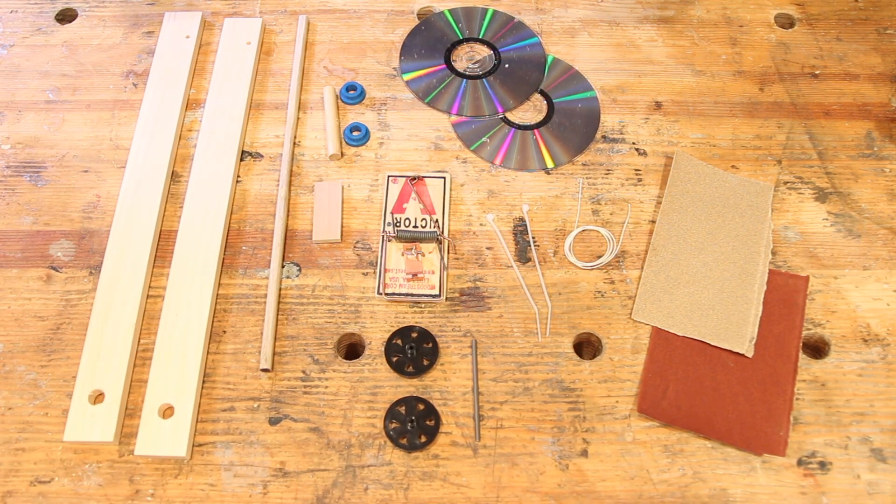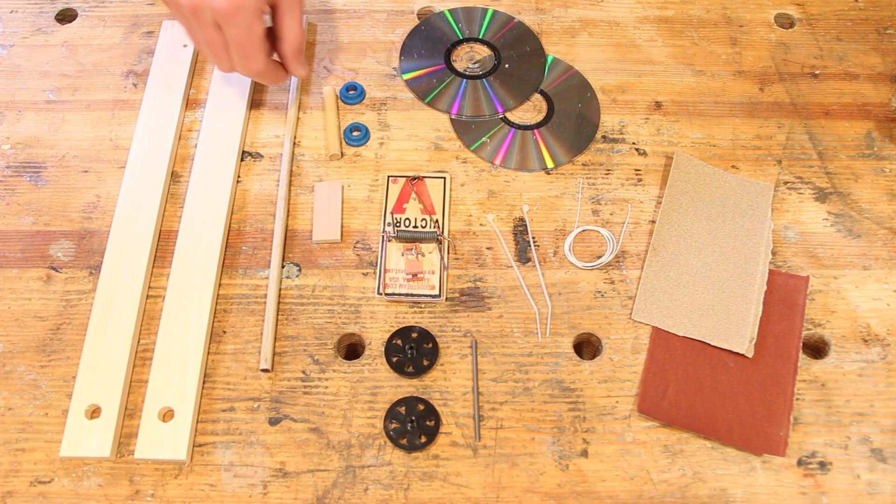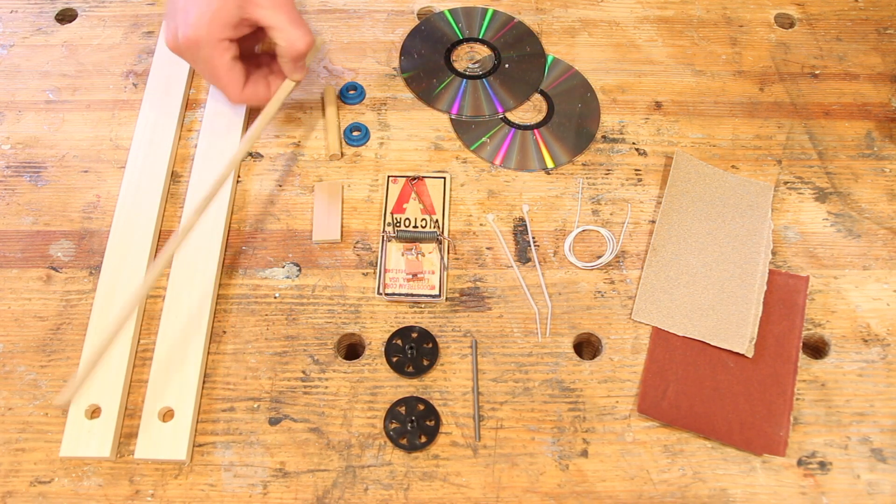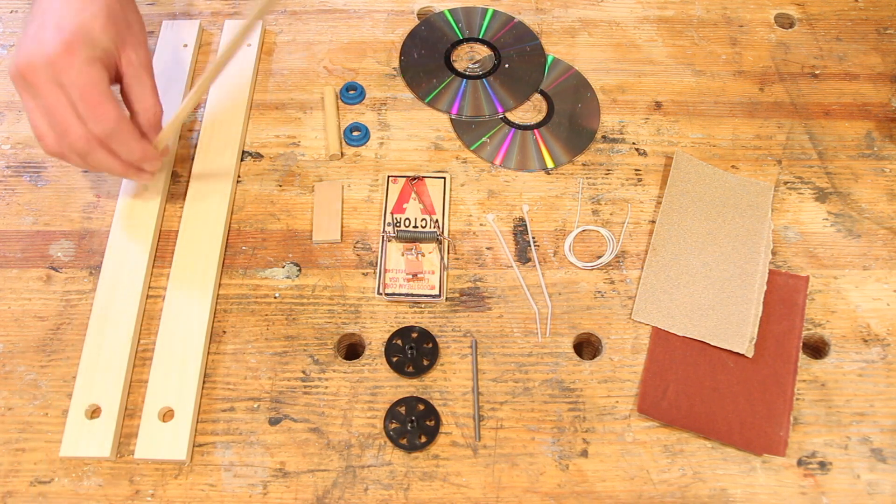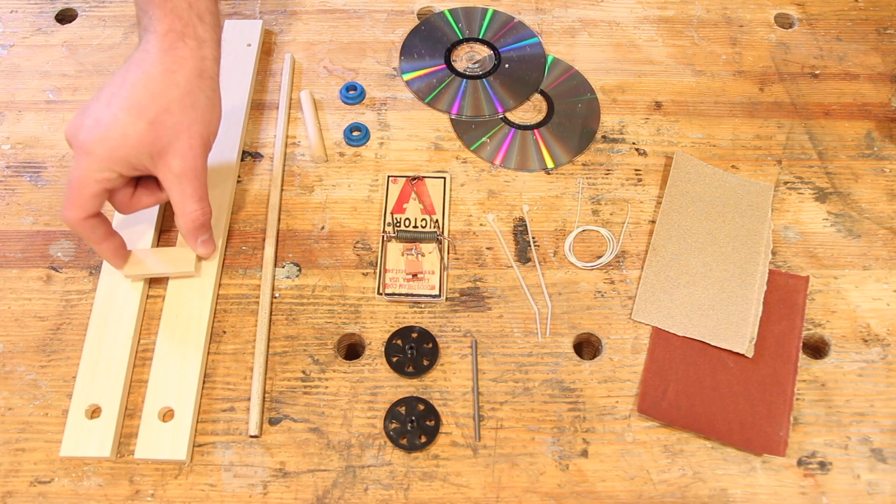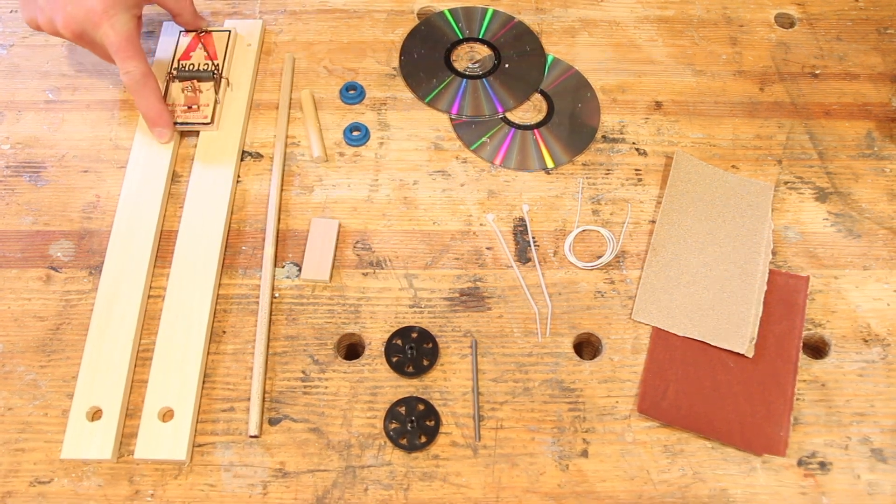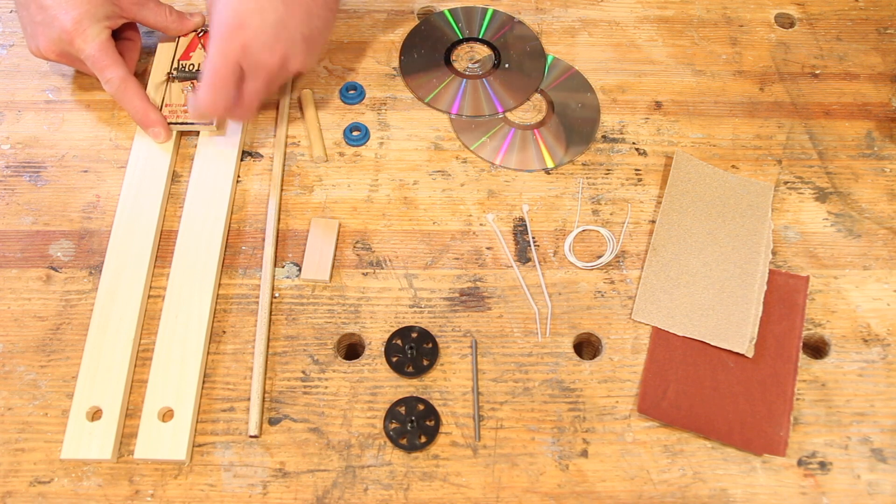These are all the parts you're going to need to make your mousetrap car. You have these two rails and a lever arm which moves with the mousetrap. You'll have this connector piece that holds the two rails together, and so does the mousetrap on the other end. It also powers your car.